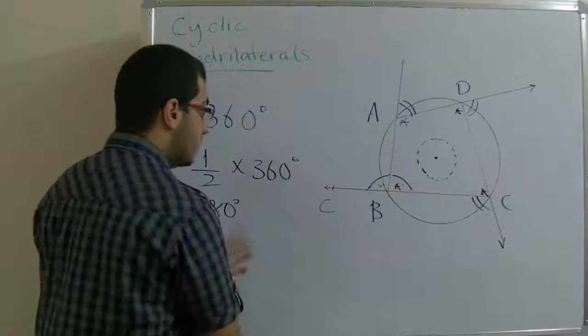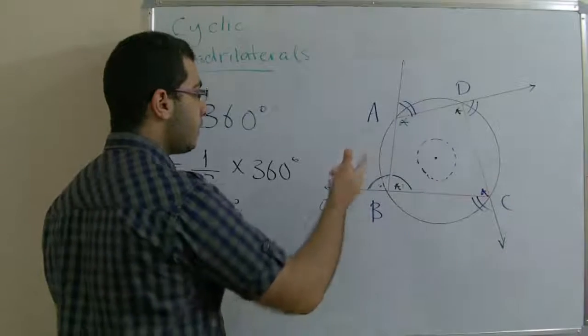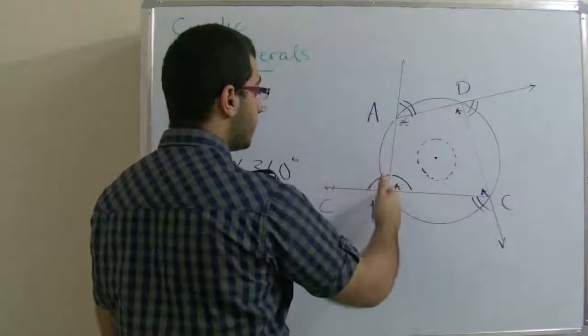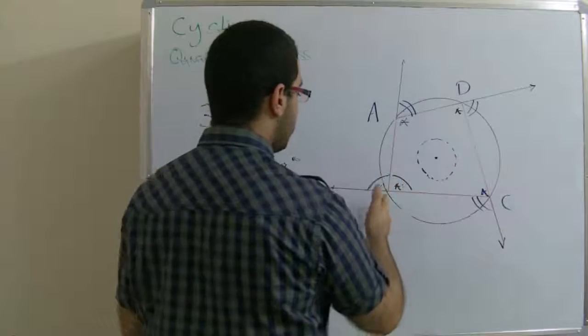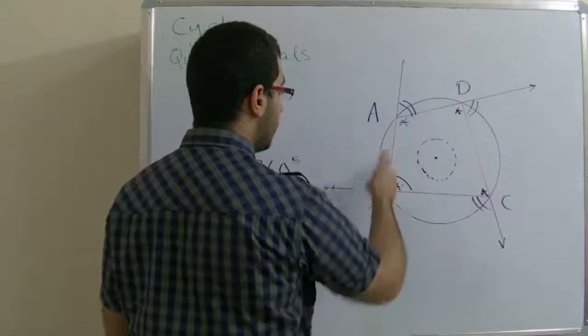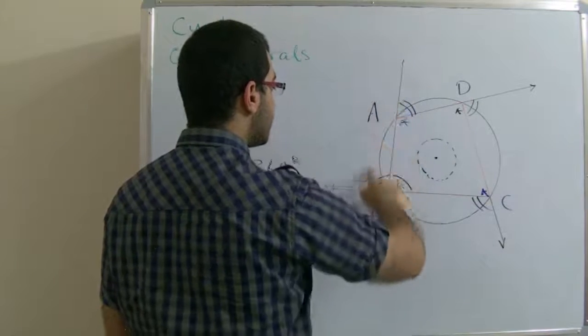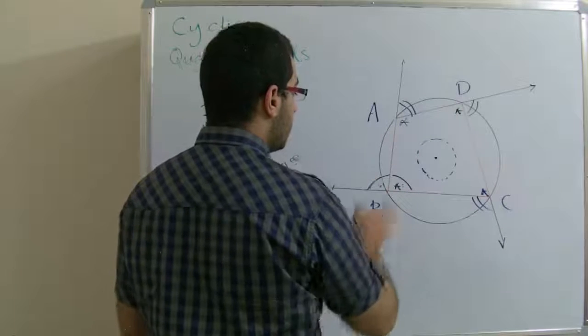These are the properties of the cyclic quadrilateral. By the way, this angle is called the angle of tangency because it cuts the circle at two points here, while the chord passes as a tangent to the circle.